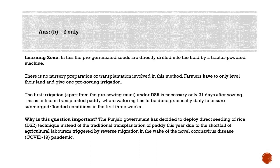In the Direct Seeding of Rice method, pre-germinated seeds are directly drilled into the field by a tractor-powered machine. There is no nursery preparation or transplantation involved. Farmers only need to level their land and give one pre-sowing irrigation. In the transplanting method, for the first three weeks the plants have to be irrigated almost daily to maintain a water depth of four to five centimeters. This water prevents weed growth by denying weeds oxygen in the submerged stage, while soft aerenchyma tissues in paddy plants allow air to penetrate through roots, so water acts as a herbicide.